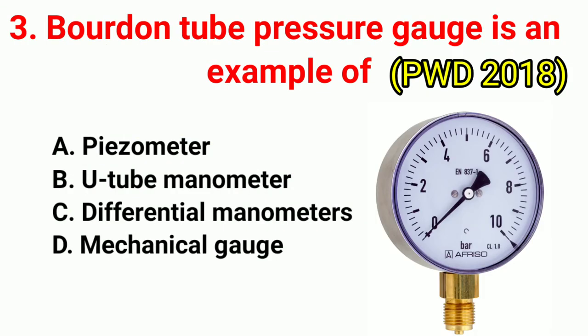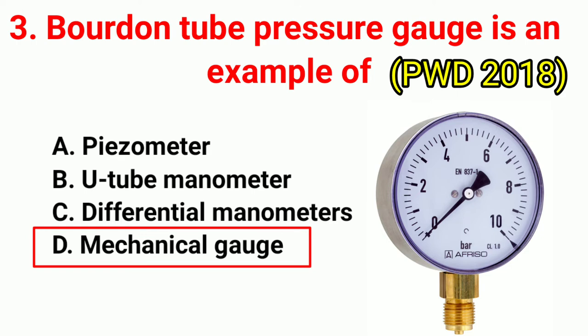Question No. 3. Bourdon tube pressure gauge is an example of? The correct answer is option D: mechanical gauge.